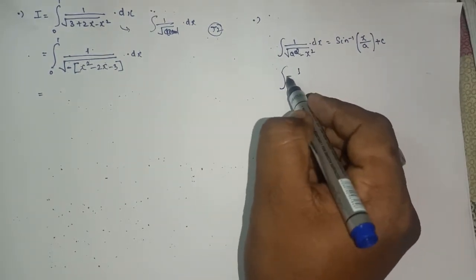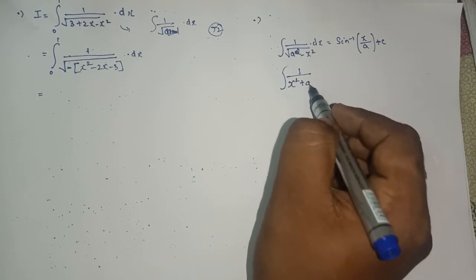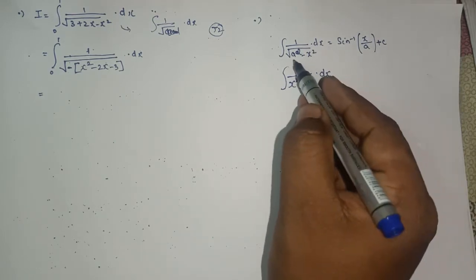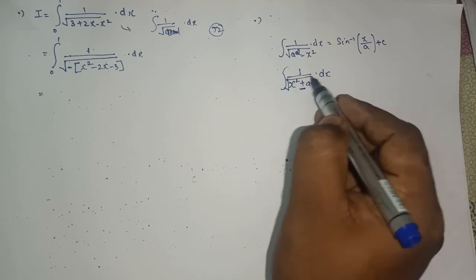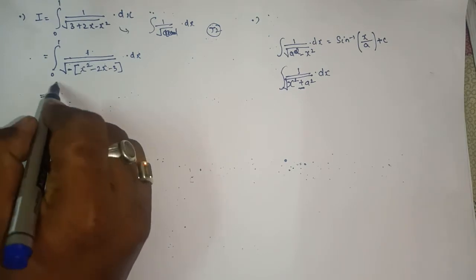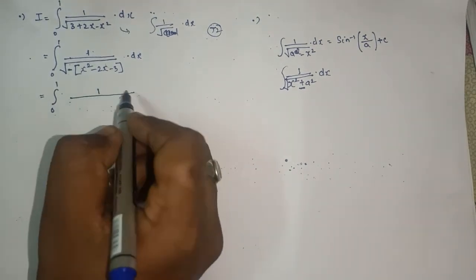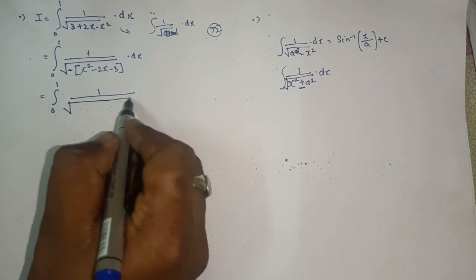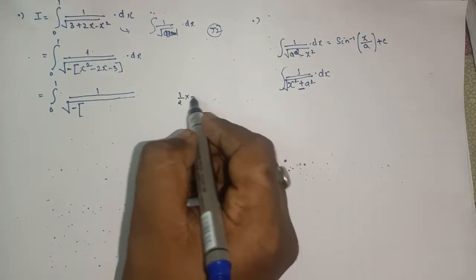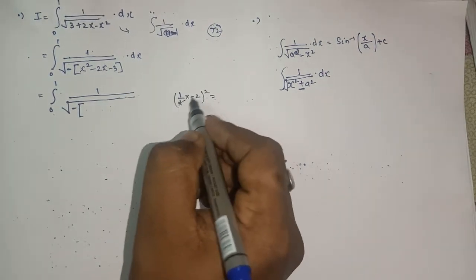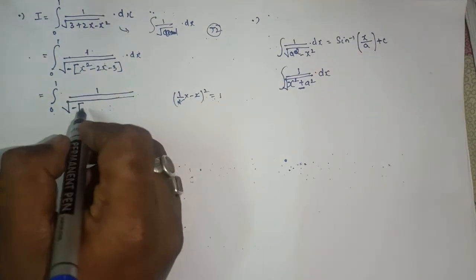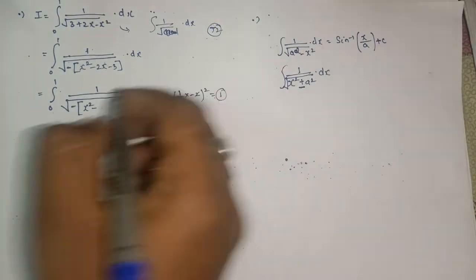As we have three formulas: the first is 1/(x² + a²), the second is 1/(x² − a²), and the third is 1/√(a² − x²). Now by using the third formula, we'll find our answer. Using the completing-the-square method: half the coefficient of x is 1 (since 2/2 = 1), so 1² = 1. We'll add and subtract that number accordingly.